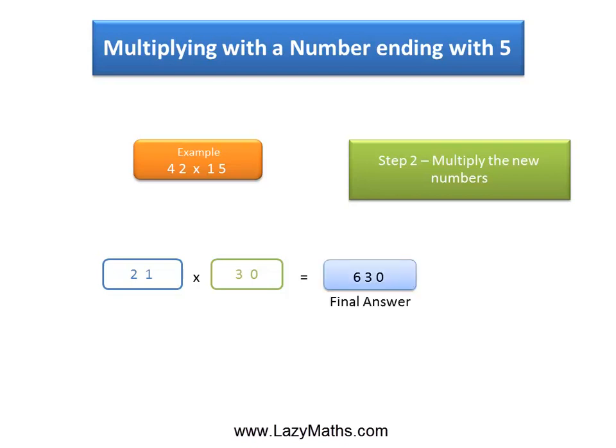And this becomes the final answer. As you can see here, because we are multiplying half of 42 with the double of 15, the answer doesn't change.